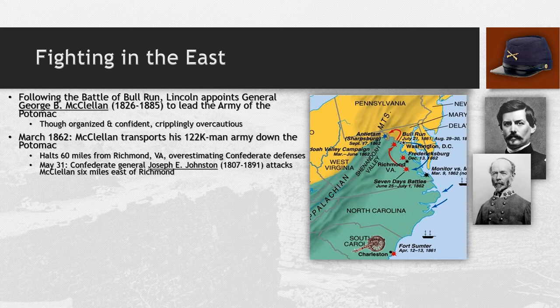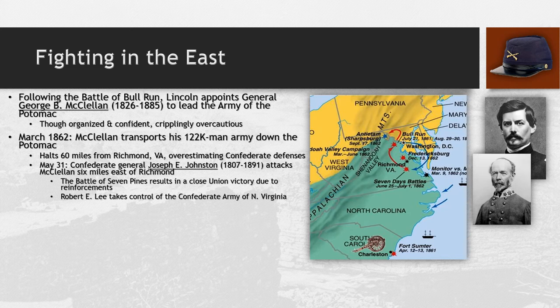On May 31st, Confederate General Joseph Johnston attacks McClellan six miles east of Richmond. McClellan has stopped and left himself open for attack. The battle known as the Battle of Seven Pines results in a close Union victory only because of reinforcements arriving in time. Robert E. Lee then takes control of the Confederate Army of Northern Virginia, so we now effectively have Ulysses S. Grant on one side and Robert E. Lee on the other.